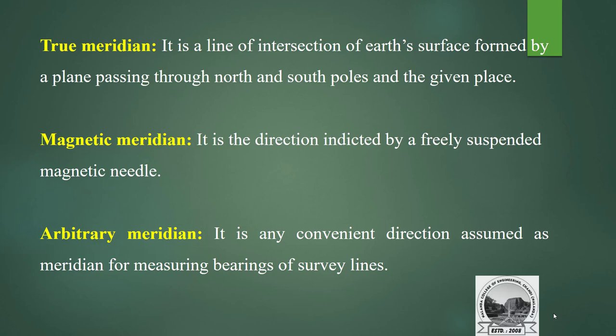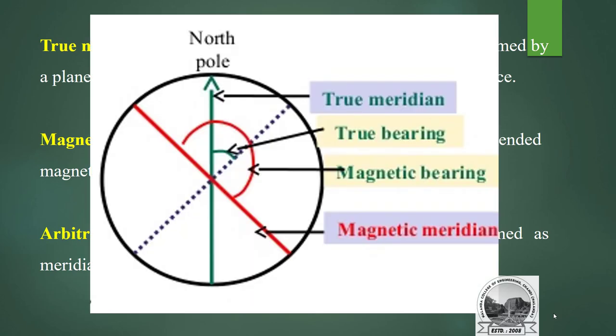True meridian starts from the north and south poles and is fixed. In magnetic meridian, when you suspend the magnetic needle, it aligns in the north-south direction, and from that meridian we measure the angle — that is the line of magnetic meridian. Arbitrary meridian means assuming any direction as reference by making reference to any line.